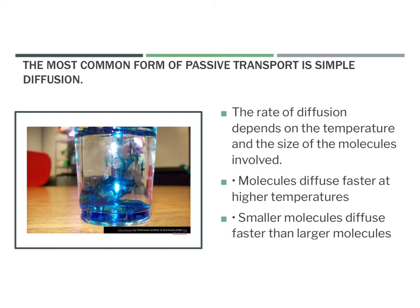The most common form of passive transport across the plasma membrane is simple diffusion — particles moving from high concentration to low concentration through the membrane. The rate of diffusion depends on temperature and the size of the molecules involved. If molecules are at a higher temperature they diffuse faster because there's more energy. Smaller molecules also diffuse faster than larger ones, as they pass through the plasma membrane more easily.